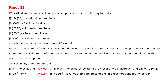Write down the names of compounds represented by the following formulas: Al₂(SO₄)₃ is aluminium sulfate. CaCl₂ is calcium chloride. K₂SO₄ is potassium sulfate. KNO₃ is potassium nitrate. CaCO₃ — calcium and CO₃ represents carbonate — so this is calcium carbonate.